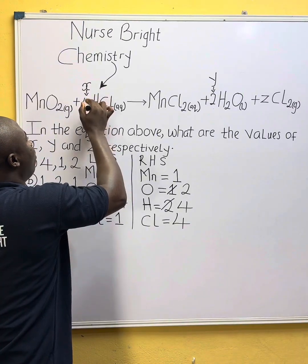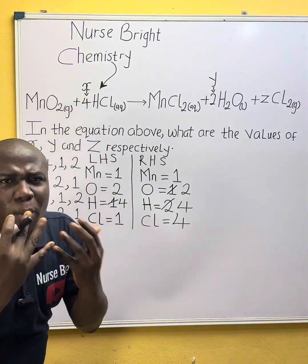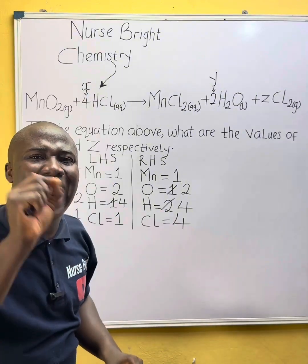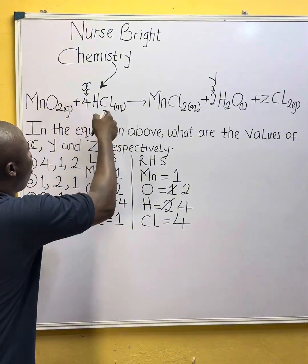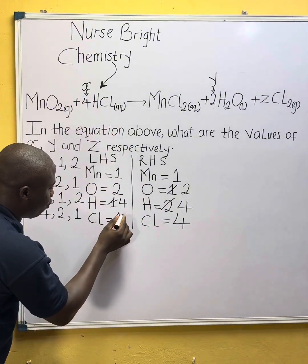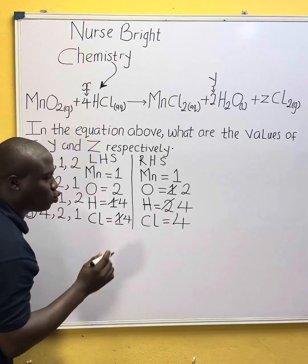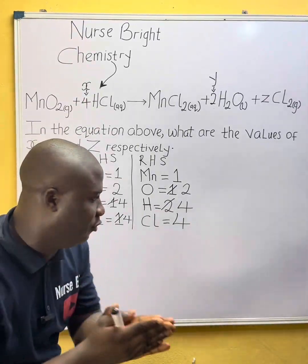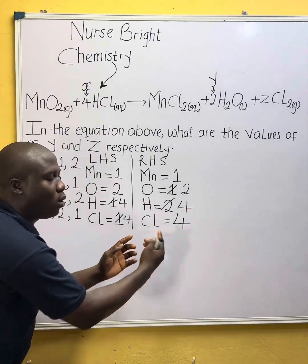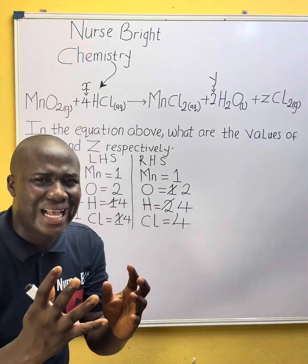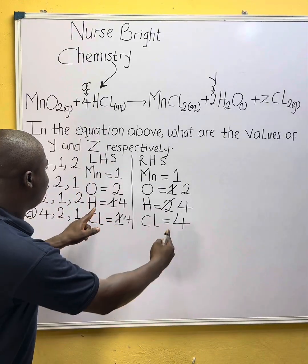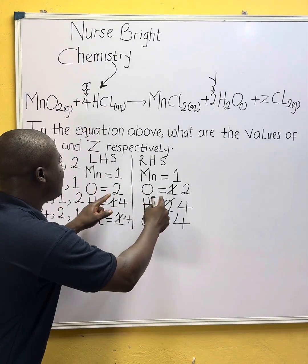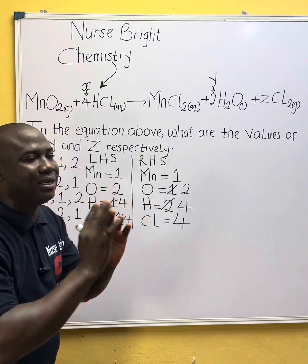So it's going to be four chlorine atoms on the left, and we already have four chlorine atoms on the right, so chlorine is balanced. Checking everything: chlorine — four and four, balanced. Hydrogen — four and four, balanced. Oxygen — two and two, balanced. Manganese — one and one, balanced.